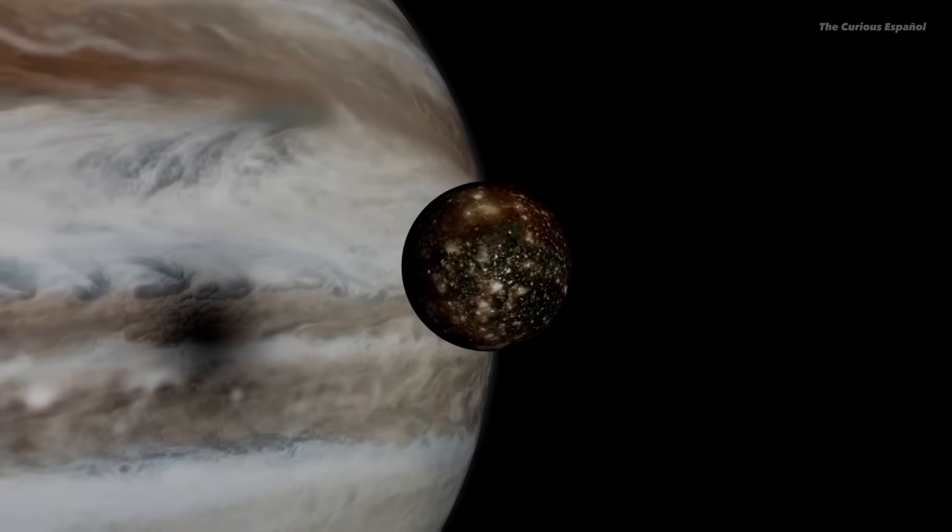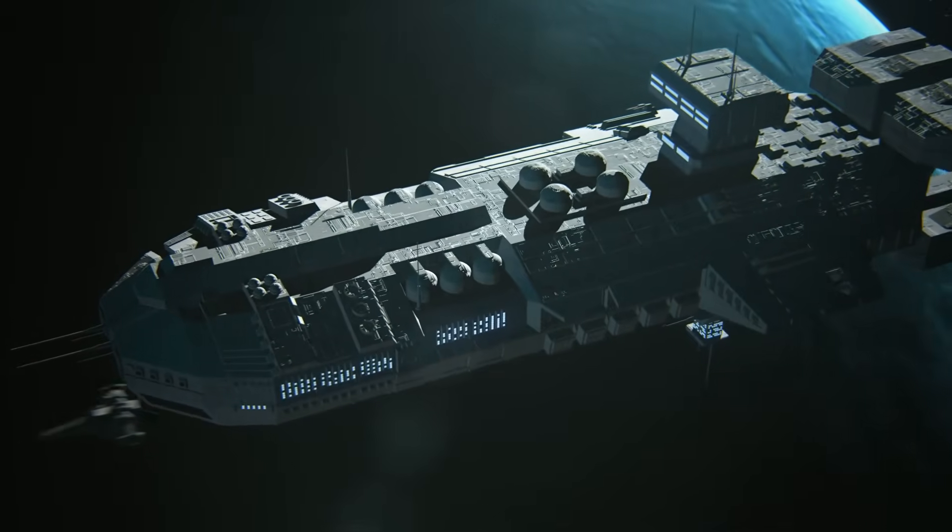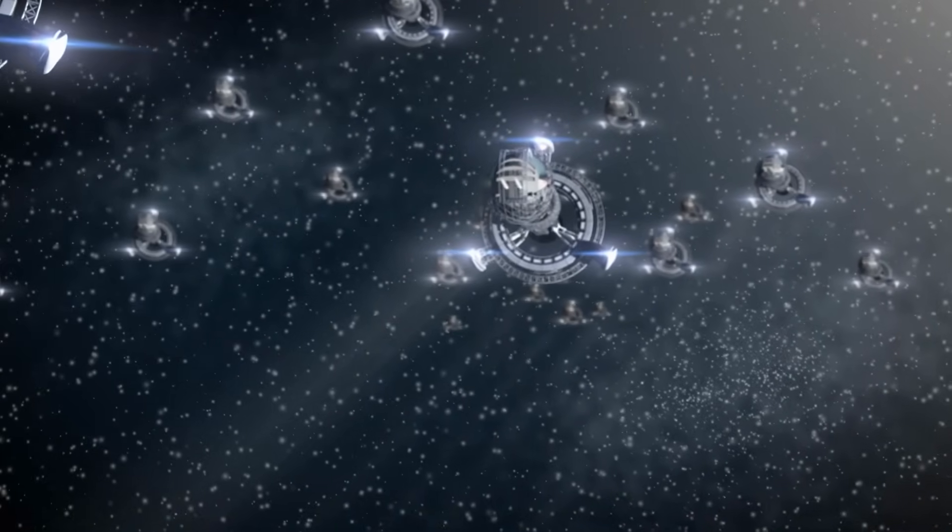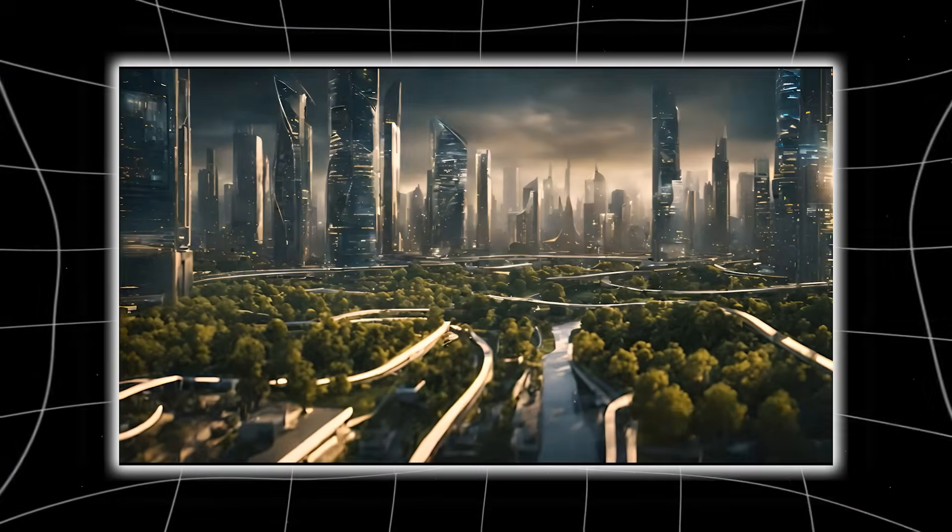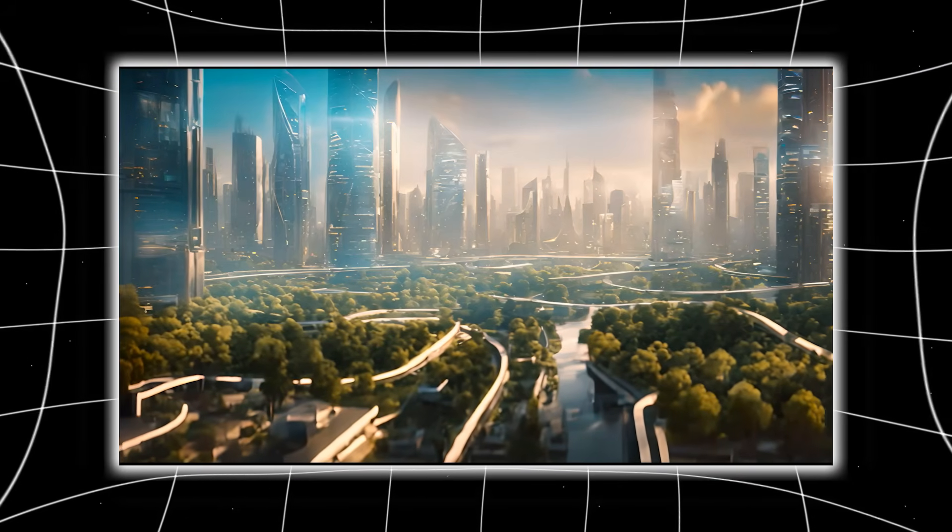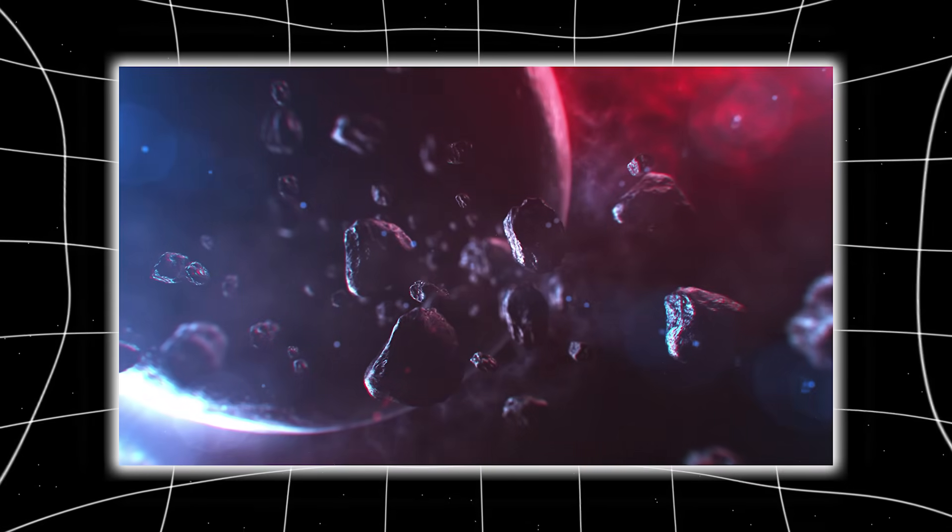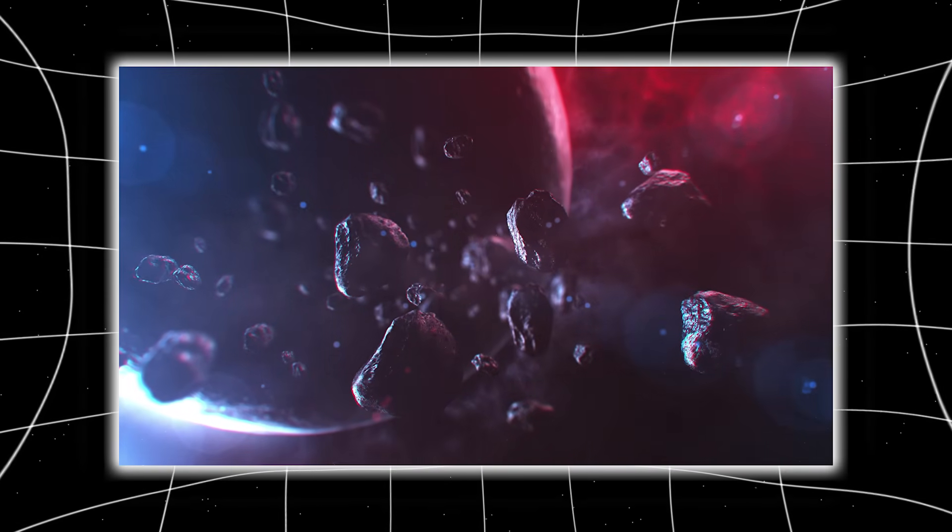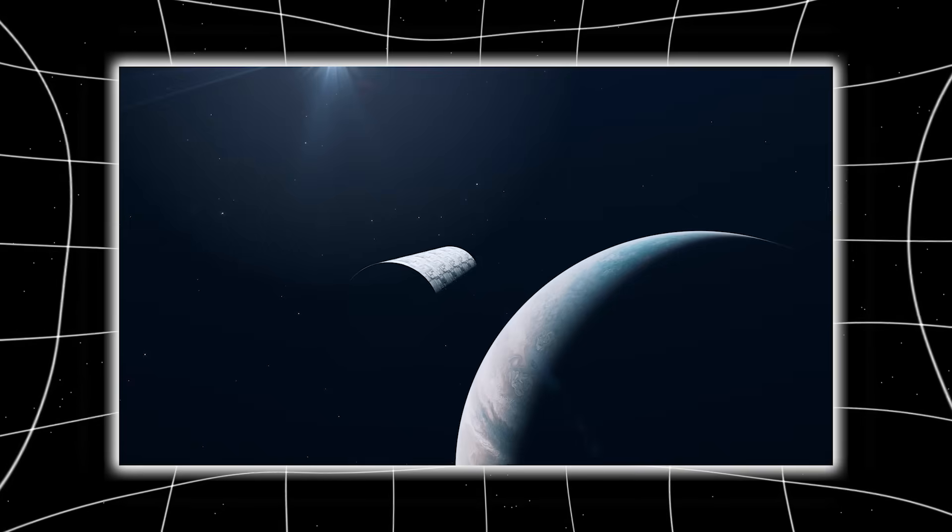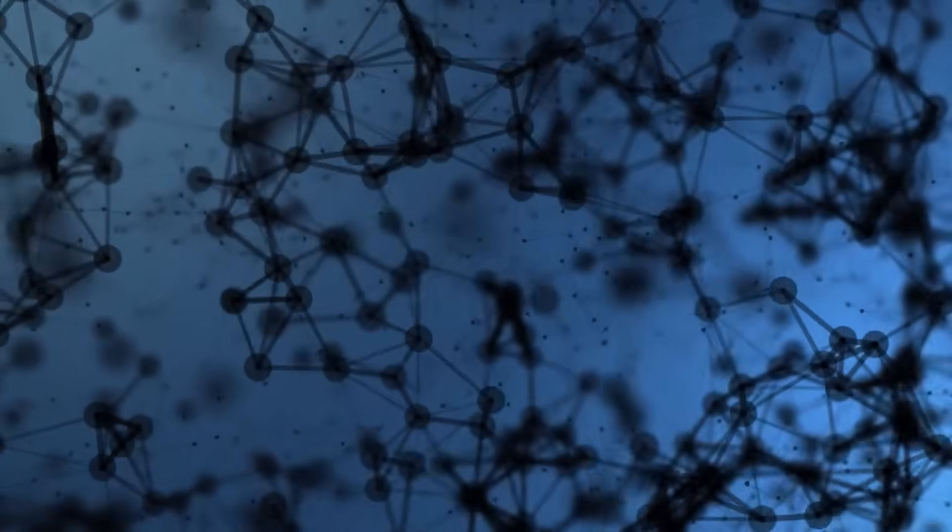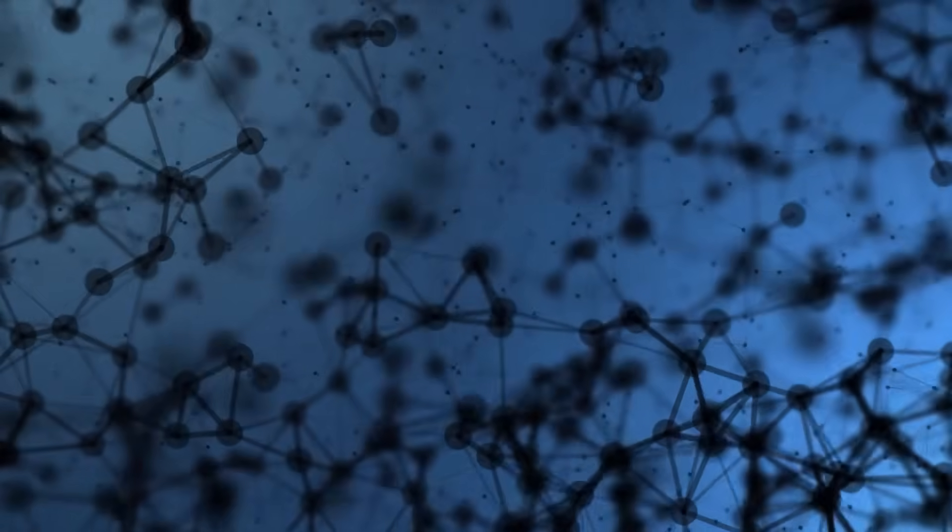Loeb speculates that Atlas could be positioned to release sondas, technological probes, into Jupiter's gravitational edge. These wouldn't be Hollywood saucers or glowing orbs. They would be silent, inert devices designed to activate only when needed. A civilization advanced enough to build such things would not waste energy sending active spacecraft. They would hide them inside natural-looking objects, letting physics do the work. And if Atlas releases anything, we might not detect it immediately. They could be microscopic, metallic, dark, cold, invisible.